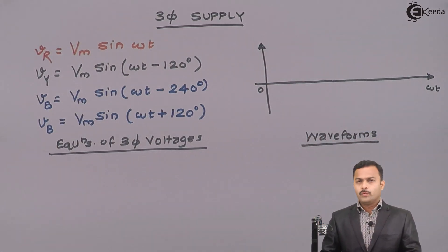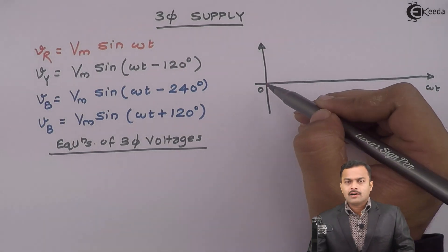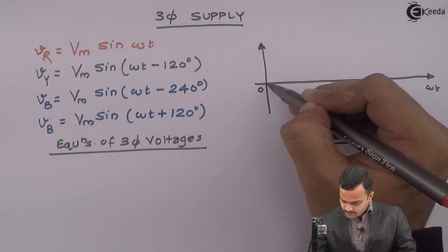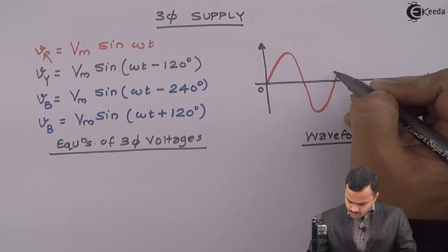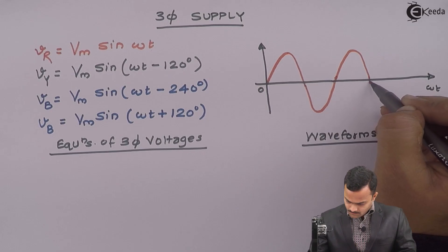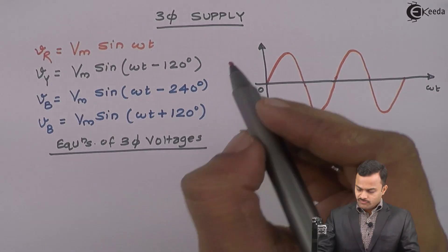First voltage is Vr, Vm sin omega t, a sinusoidal voltage having a phase angle 0. So, starting from 0, this will be Vr.